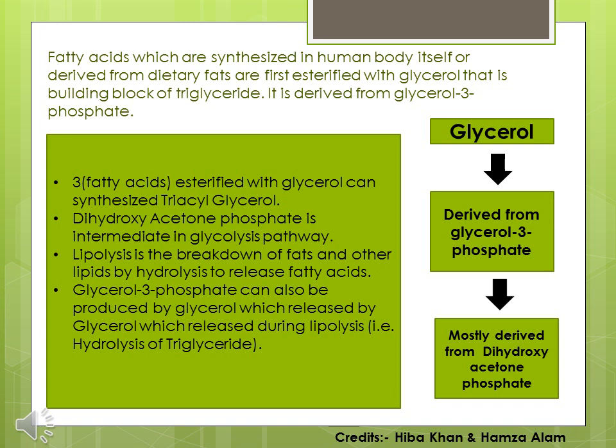Now this glycerol 3-phosphate is mostly derived from dihydroxyacetone phosphate, which is an intermediate in the glycolysis pathway. It can also be produced from glycerol which is released during lipolysis — that is, hydrolysis of triglyceride.